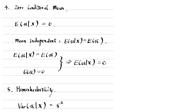The first four assumptions ensure that the OLS estimators are unbiased estimators for the population coefficients. The homoscedasticity assumption is for the OLS estimators to be the most efficient estimators, that is, to have the smallest variance.